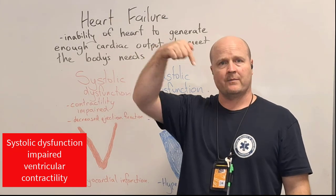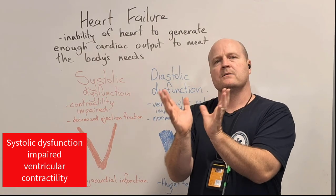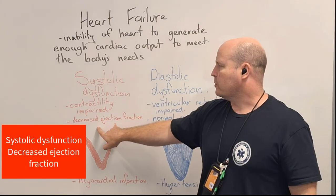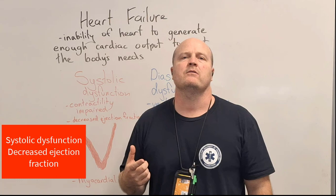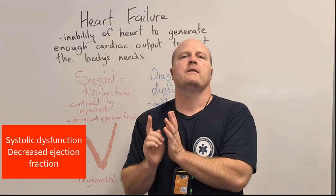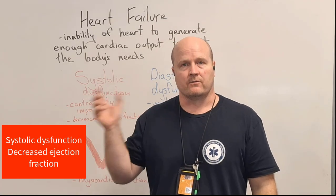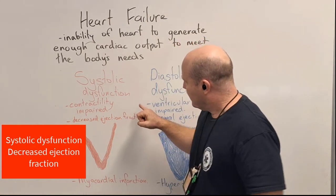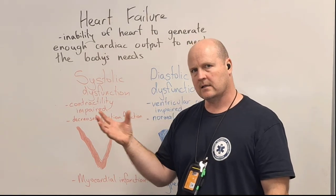With systolic dysfunction, we get a good amount of blood coming into the heart and filling up the ventricles — that's preload — but the heart has a problem contracting so it can't empty out all the blood. This is called a decreased ejection fraction. Ejection fraction is a comparison between the preload, the amount of blood that filled the ventricle, and the amount ejected out. Normal is about 55 to 70 percent, but with systolic dysfunction we'll have less than that because contractility is decreased.